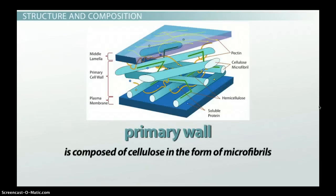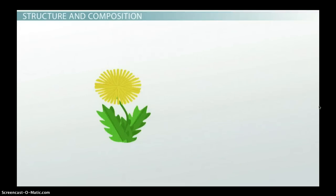The primary wall is the next layer. It is composed of cellulose in the form of microfibrils. These cellulose microfibrils weave together with glycans, increasing the strength of the cellulose. Pectins can also be found in the primary cell wall. With all of this strength, you would think nothing could squish a dandelion.